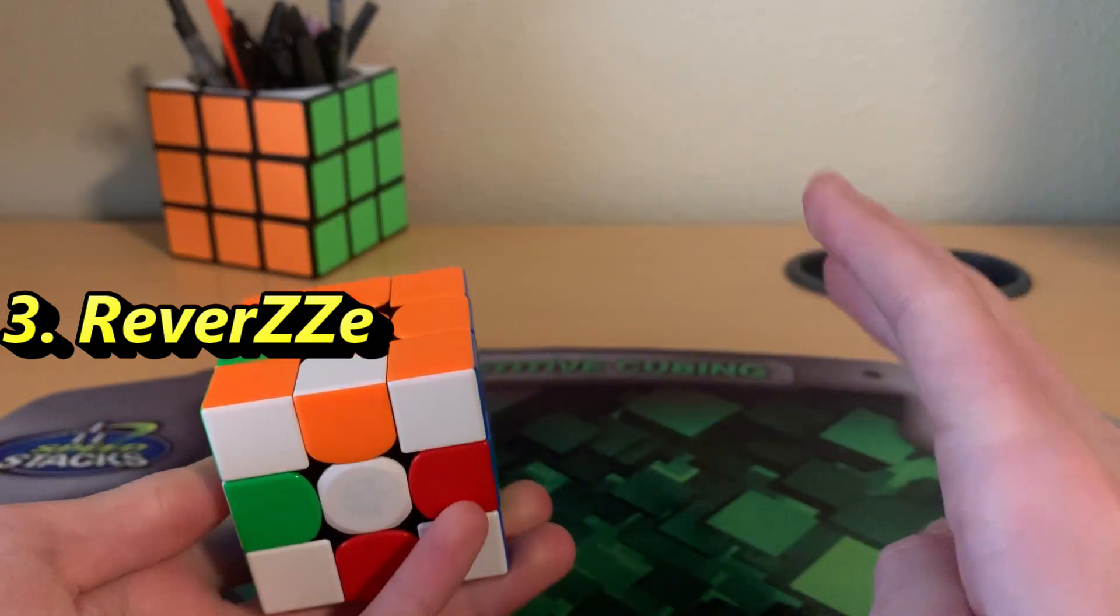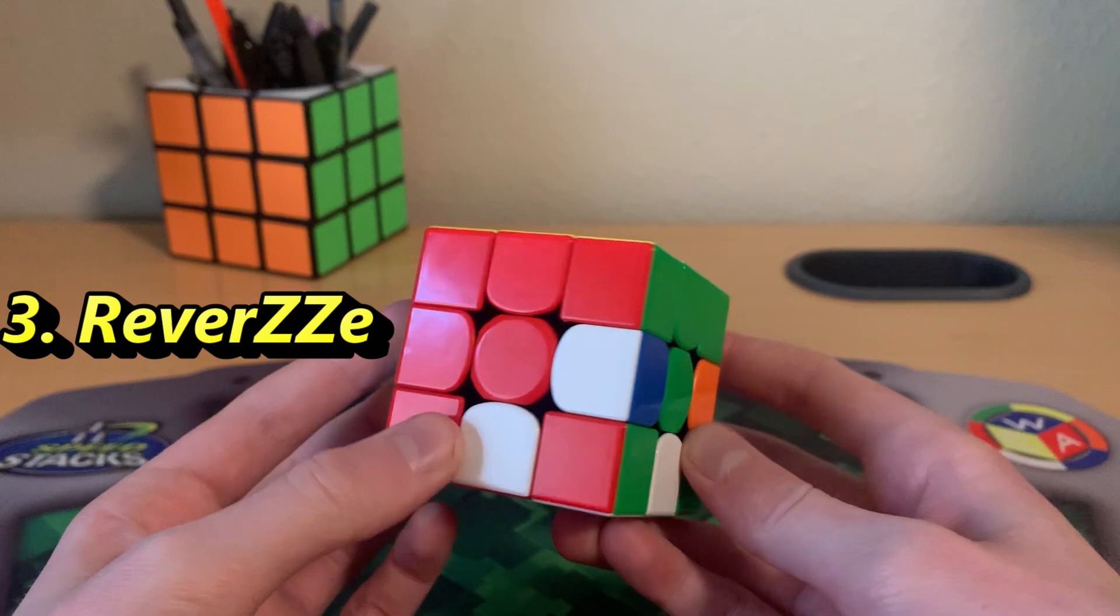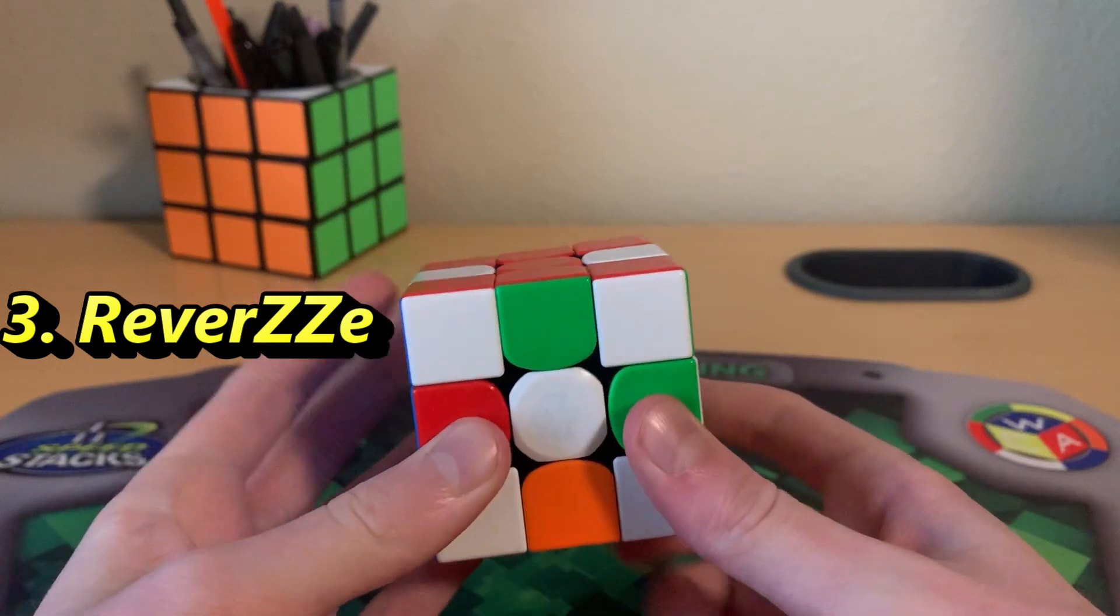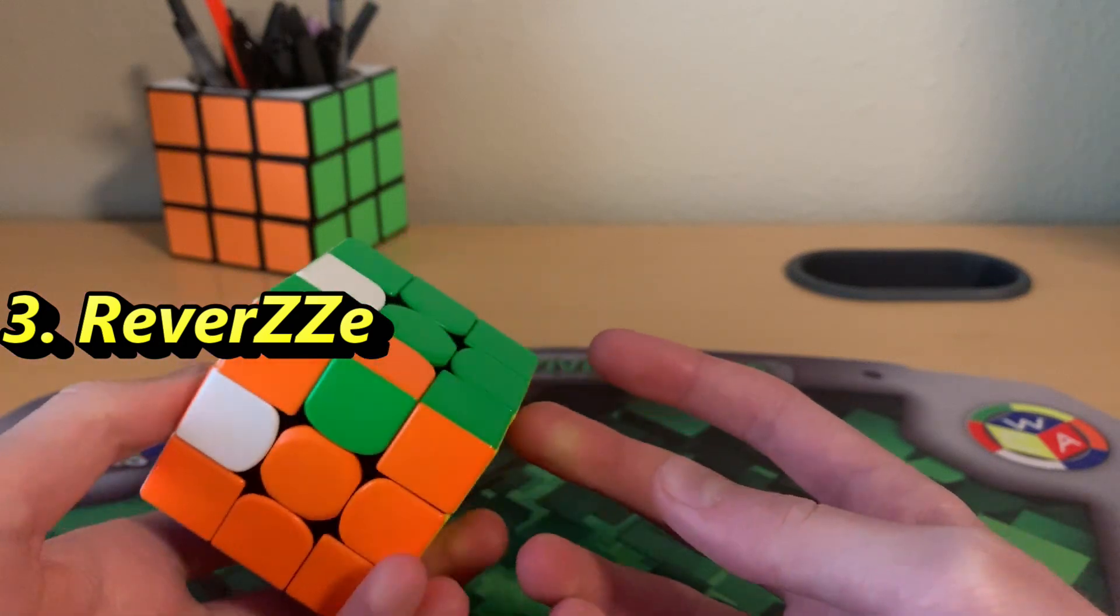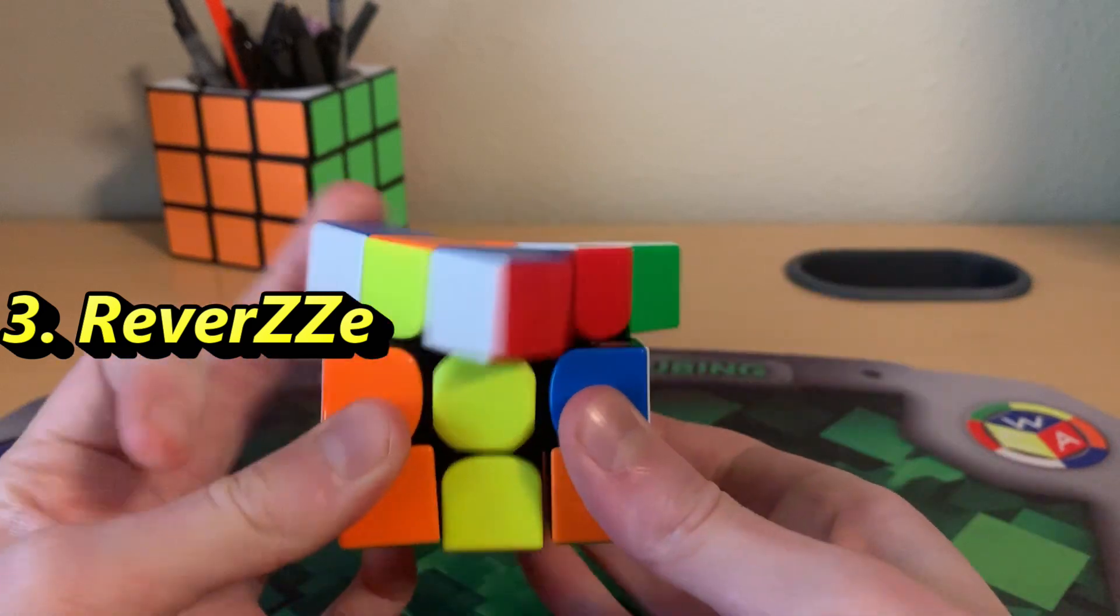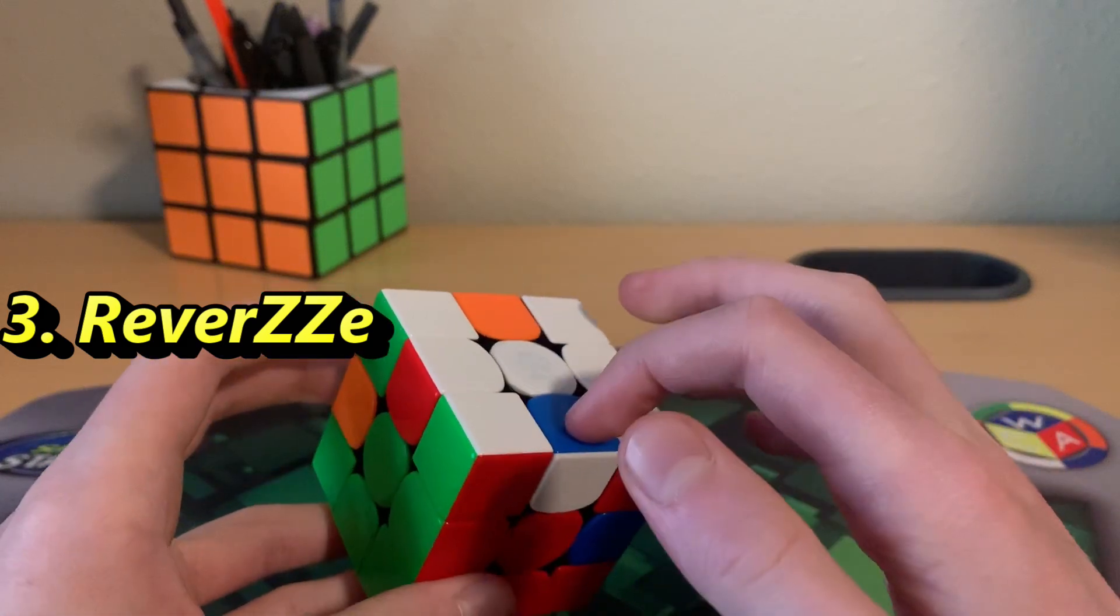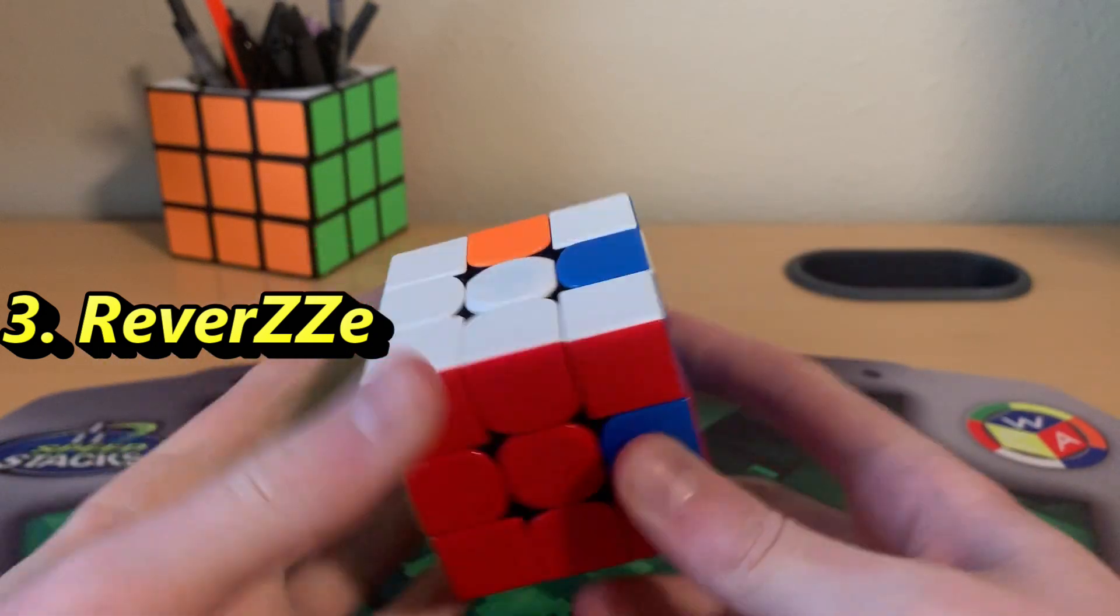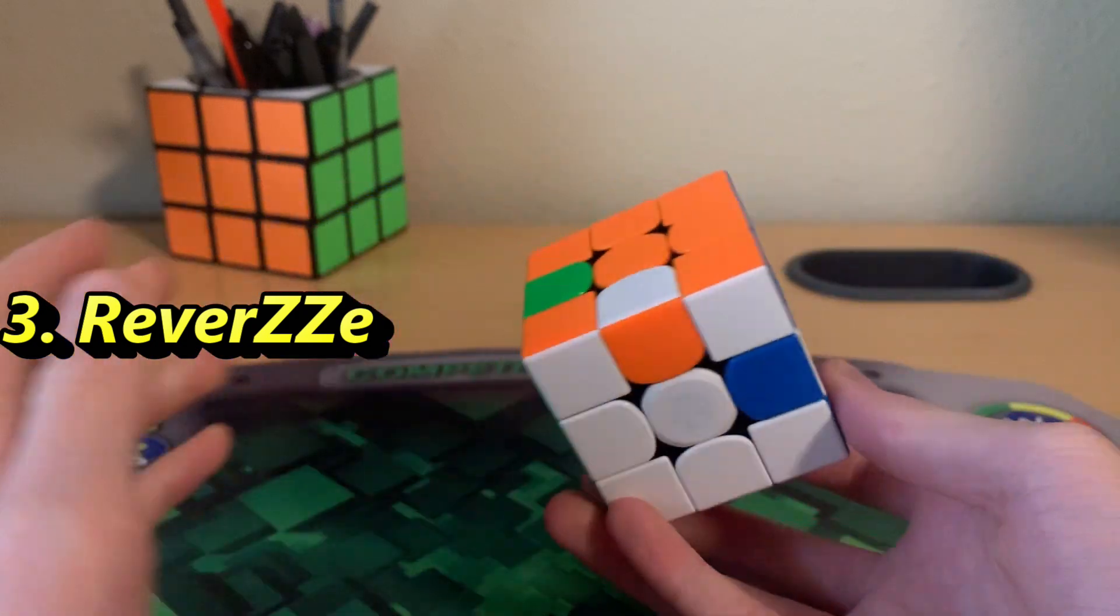So we've done last layer and ZZ first block. We don't have to worry about orientation at all. It literally does not matter. So now we do the same thing for the other block. So this piece is in the wrong place. Move it over there. To put this piece there without wrecking anything else, we can do R, F and then the U-perm and then undo those moves. And now we just do one last U-perm to solve the first block. So now we've done last layer and we've put pieces in the first block and second block of ZZ.